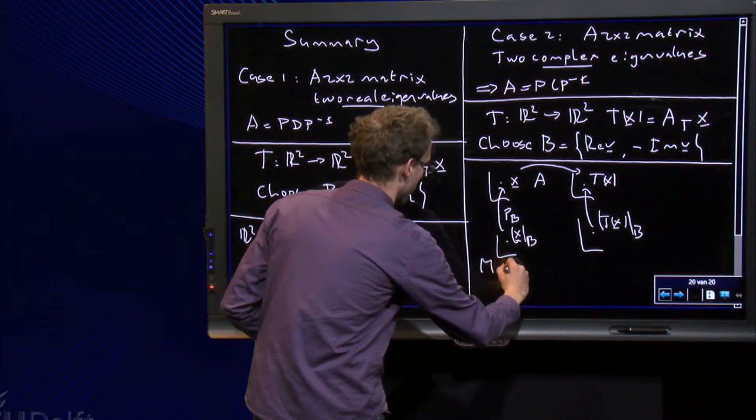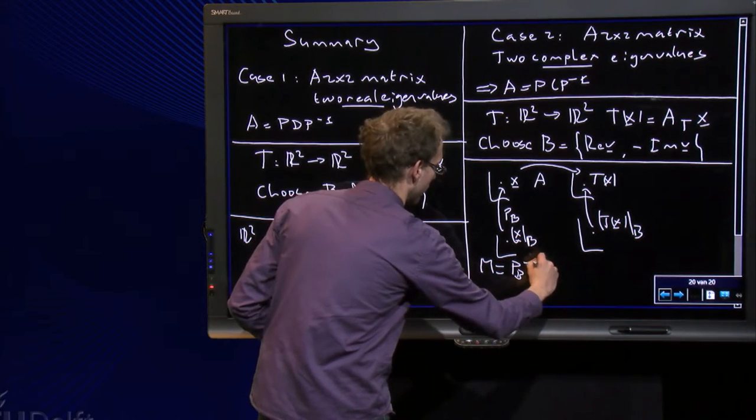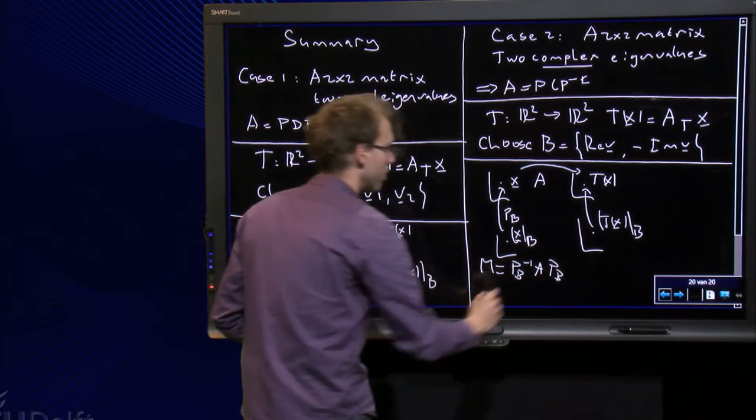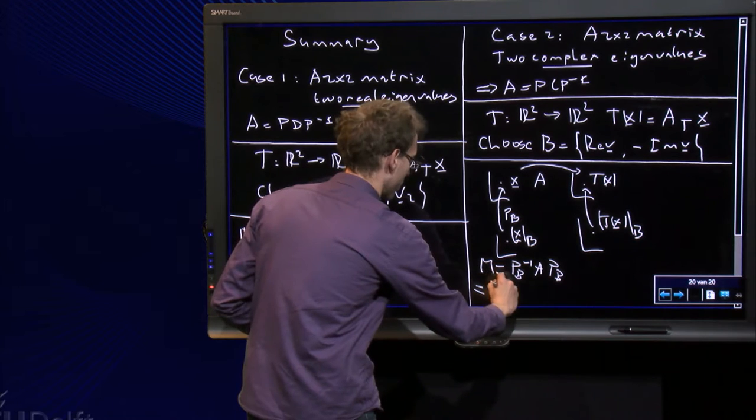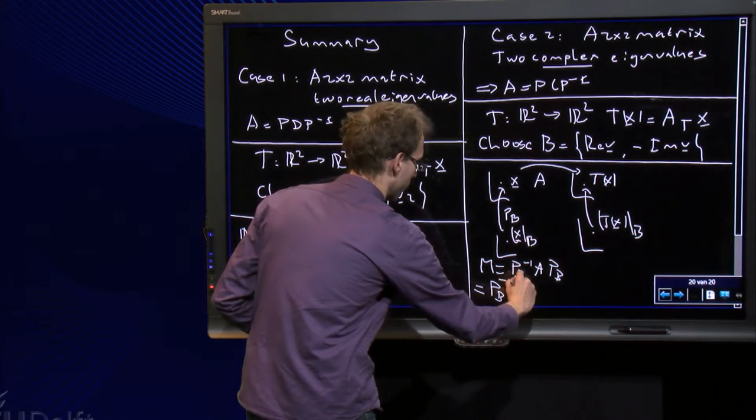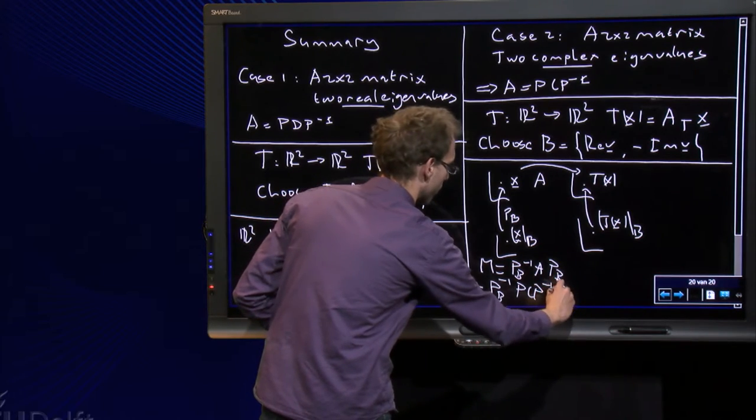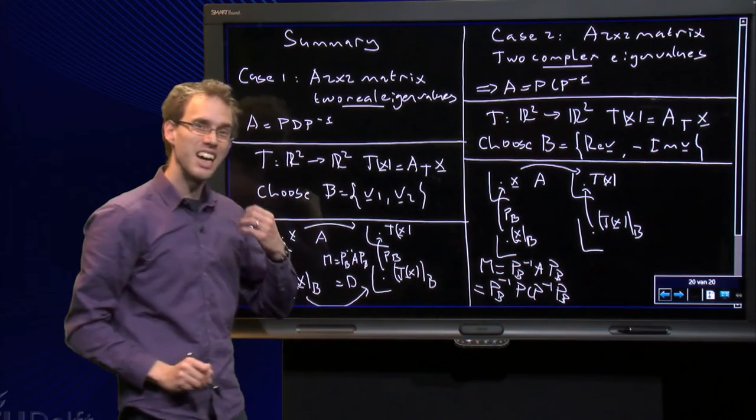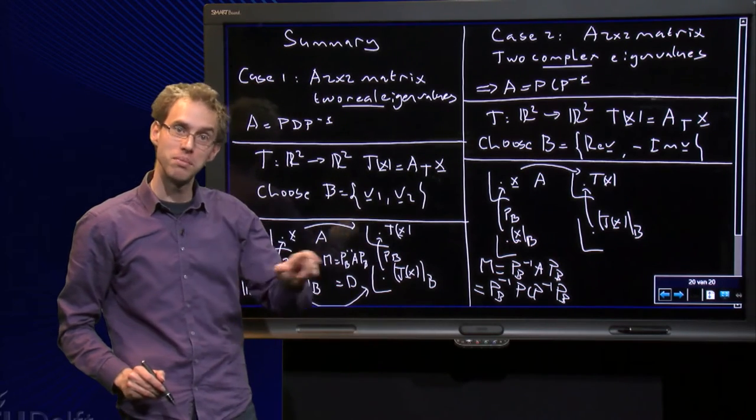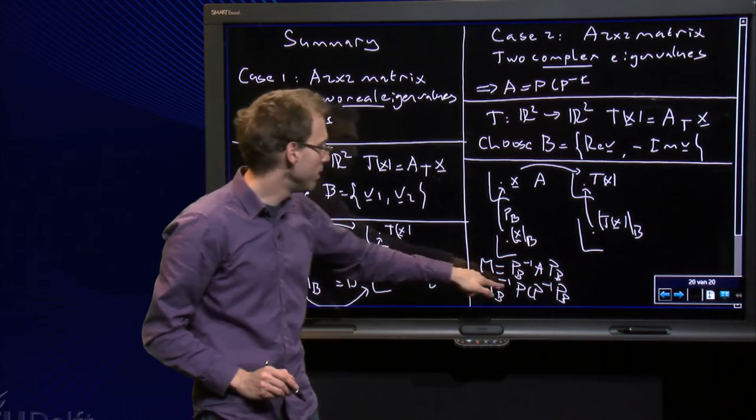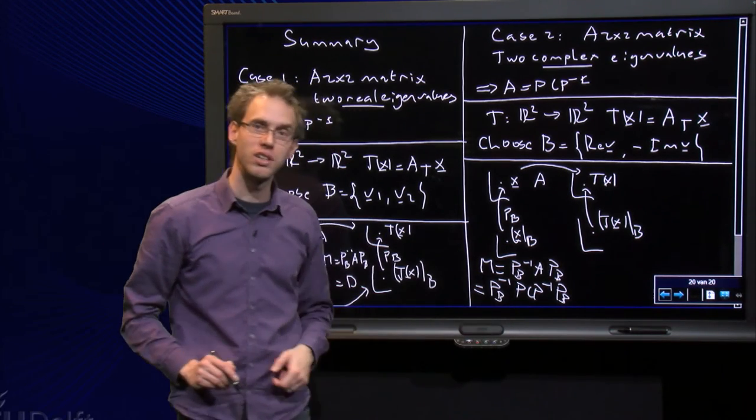Well, M equals PB inverse A PB, which is always the case. Now I know that A equals PCP inverse, and since I chose my P to consist of the real part of V minus the imaginary part of V, the PB and P are exactly the same, so PB inverse and P cancel each other out.